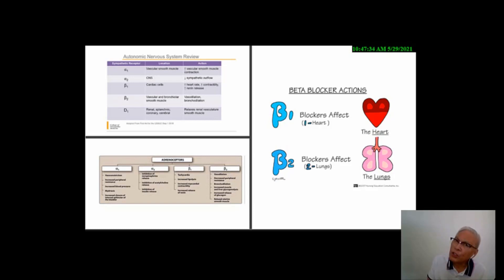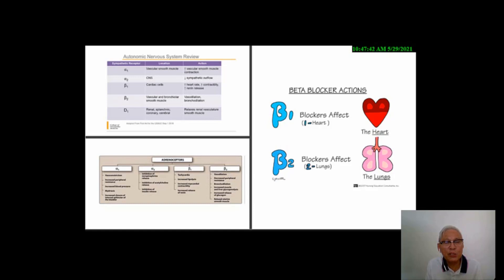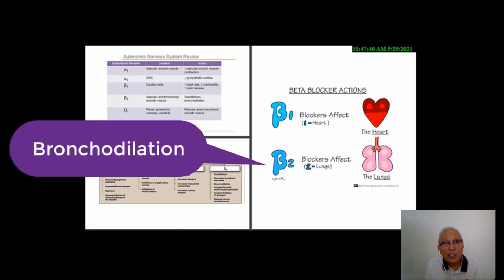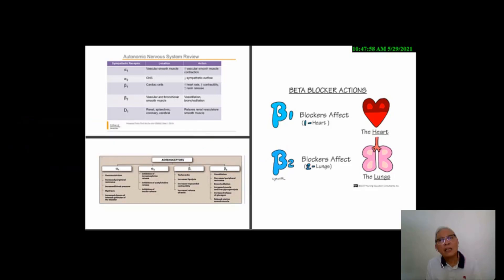Beta 2 receptors are abundant in the lungs, in the vascular and bronchial smooth muscle. Therefore, stimulation of beta 2 receptors by norepinephrine or epinephrine results in vasodilation as well as bronchodilation.